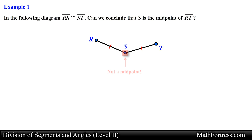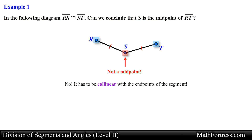Unfortunately, point S is not the midpoint of segment RT. In order for a point to be considered a midpoint, it has to be collinear with the endpoints of the segment. Looking at the diagram we see that point R, point S, and point T are not collinear, so point S cannot be a midpoint. This is an example of a special case where two segments that share the same point are congruent and yet the common point between the segments is not a midpoint.